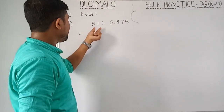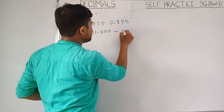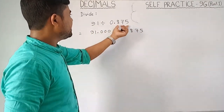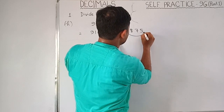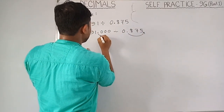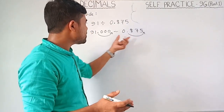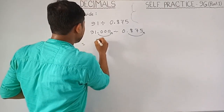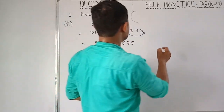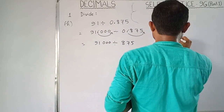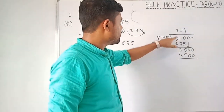Question h: 91 divided by 0.875. There is no decimal point in 91, so we can write it as 91.000. The divisor 0.875 has three decimal places, so you have to move the decimal point three places. For the dividend, you also have to move three decimal places. So it becomes 91000 divided by 875.